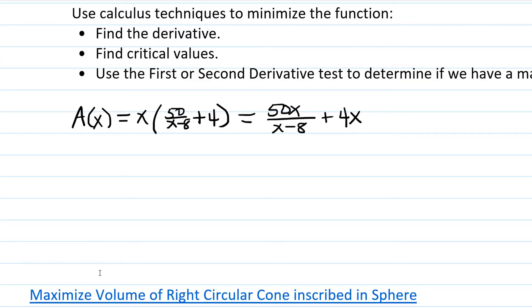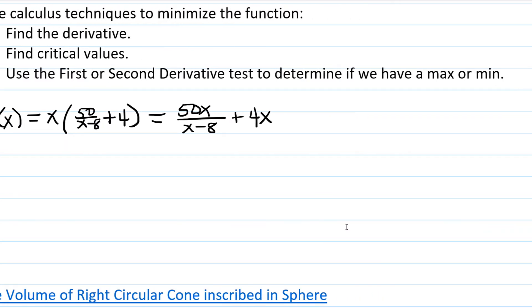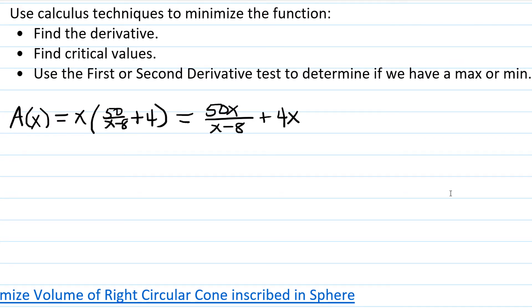Now I'm going to use calculus techniques to minimize the function. I'm going to find the derivative, find the critical values, and use the first or second derivative test to determine if we have a max or a min. Before I decide whether to use a first or second derivative test, I'm going to see how complicated my first derivative is, because sometimes that influences which way I go. I've rewritten the area function as 50X over X minus 8 plus 4X.